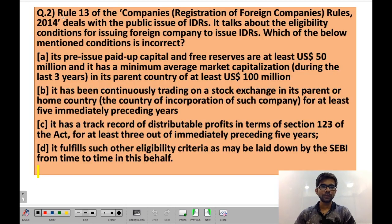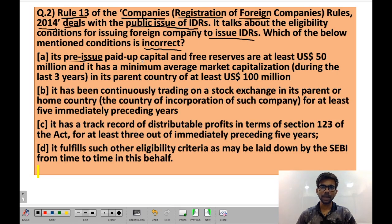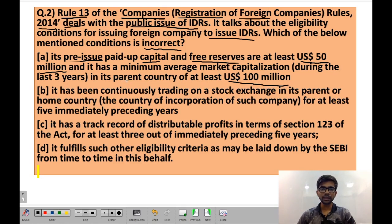Question number 2: Rule 13 of the Companies (Registration of Foreign Companies) Rules 2014 deals with the public issue of IDRs and talks about the eligibility conditions for a foreign company to issue IDRs. Which of the below-mentioned conditions is incorrect? Statement A says: its pre-issue paid-up capital and free reserves are at least US$50 million, and it has a minimum average market capitalization during the last 3 years in its parent country of at least US$100 million. This statement is correct as per Rule 13.